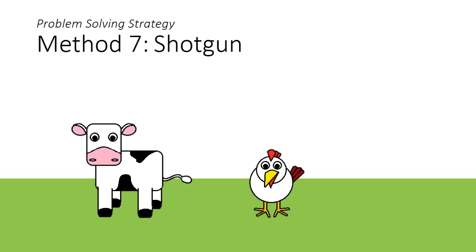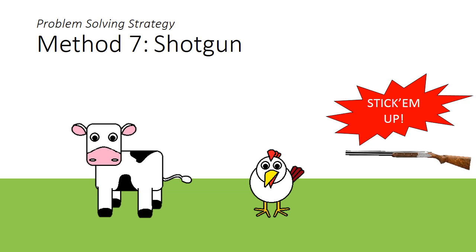And that brings me to method 7. When I see this cow and chicken problem, my favourite solution is to just use a shotgun. I aim it at the cows and the chickens, and I ask them to stick them up.